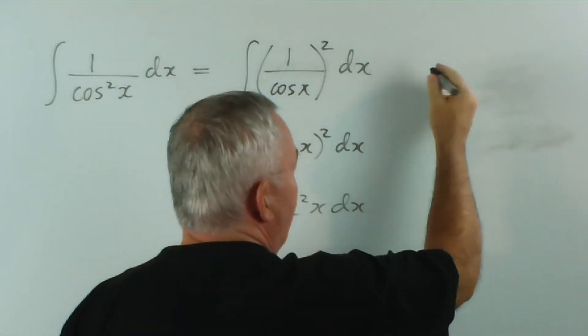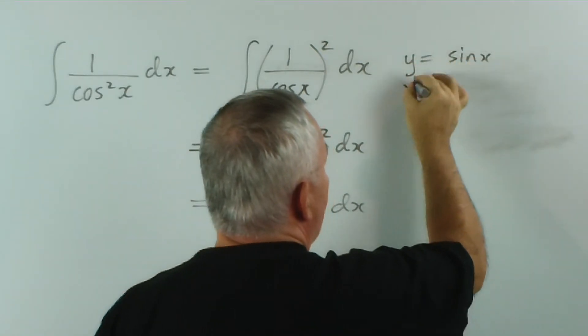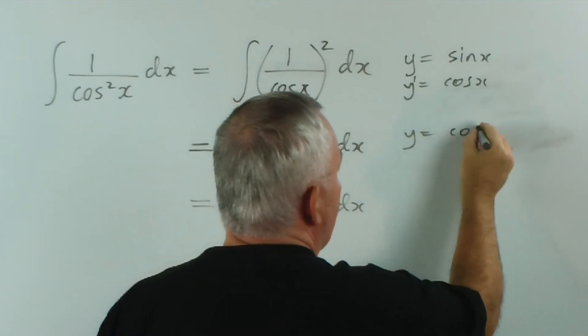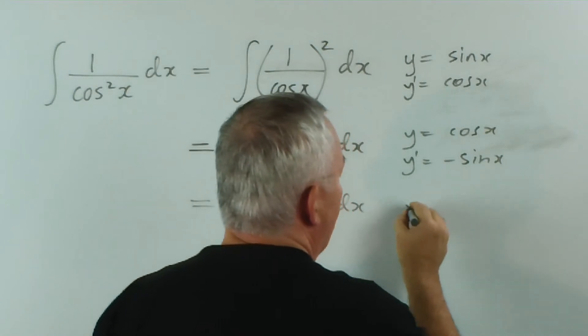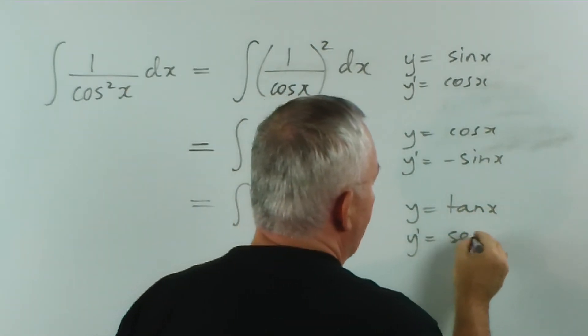Remember the three basic functions. If y equals sin x, the derivative is cos x. If y equals cos x, the derivative is minus sin x. And if y equals tan x, the derivative is sec squared x.